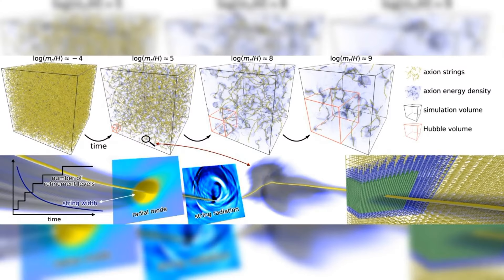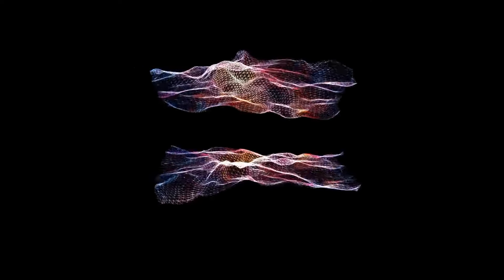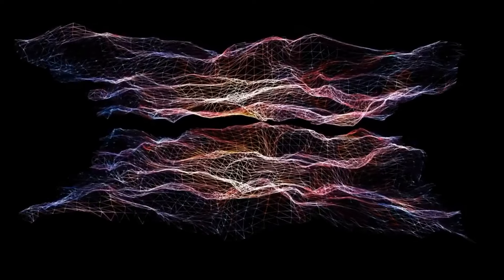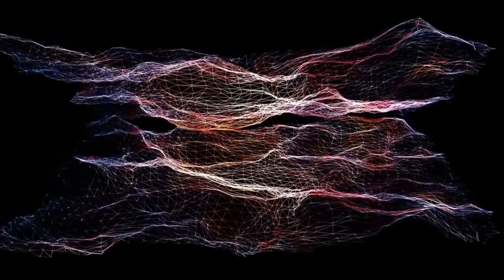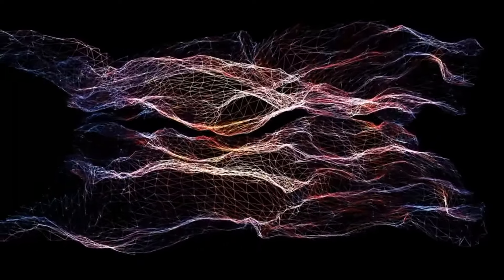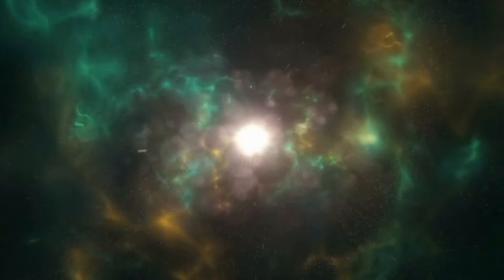The landscape problem: string theory introduces a multitude of possible configurations, each with its own set of physical laws and properties. This lack of uniqueness complicates the task of identifying the specific version of string theory that accurately describes our universe.